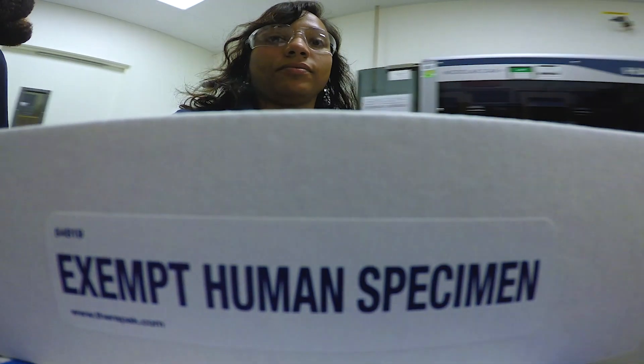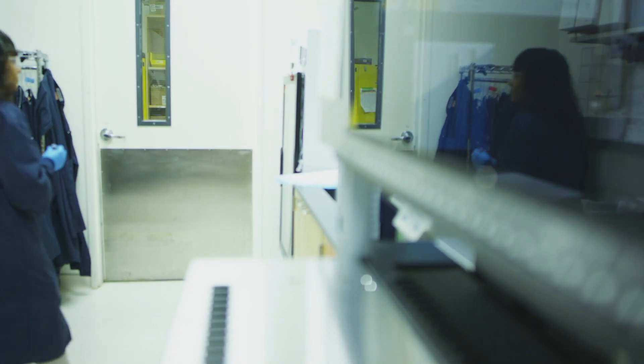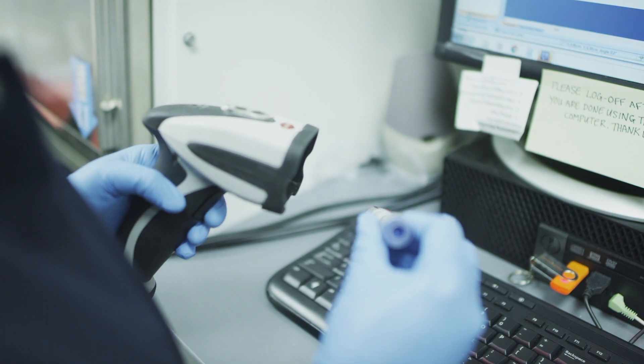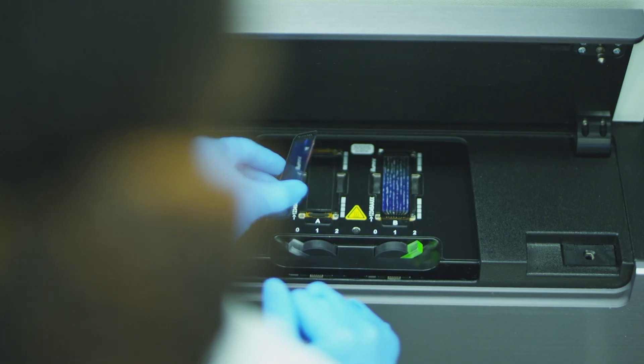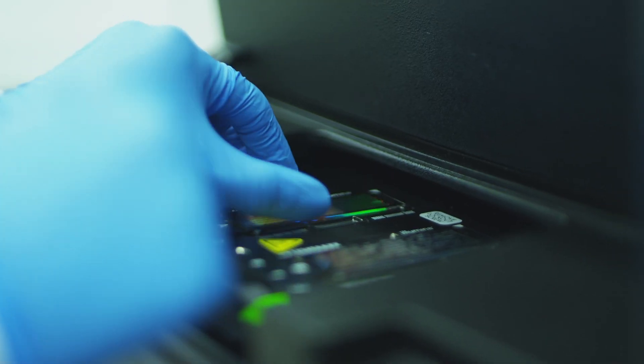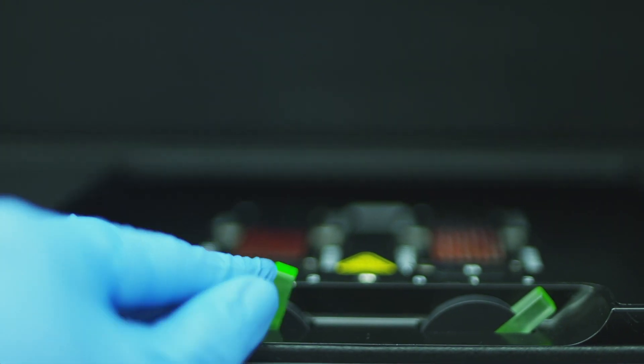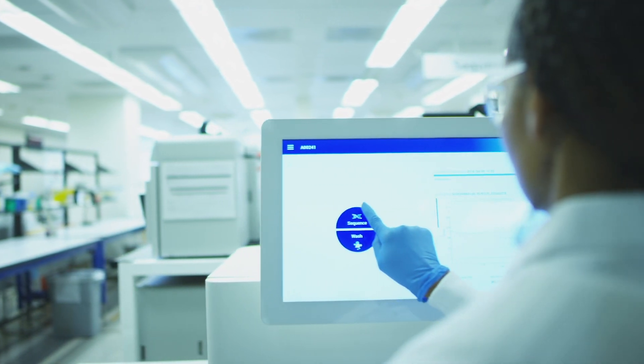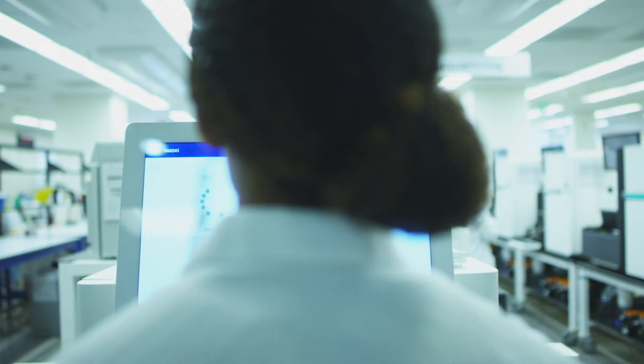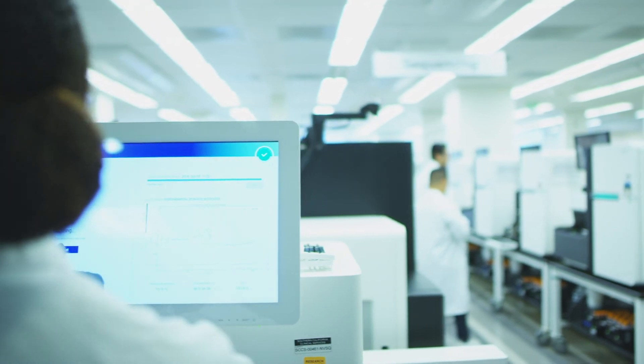By 8:30 we have a FedEx shipment that comes in. The inventory management team processes those samples, so by 9 CLS will extract the DNA from the whole blood. Set up their runs to prepare the DNA to go through our library preparation process so that it can be put onto our DNA sequencers.